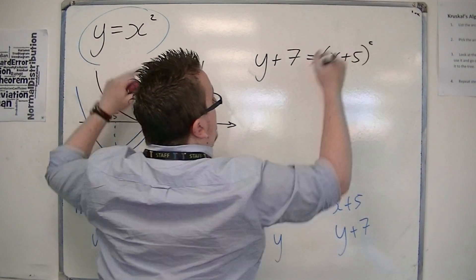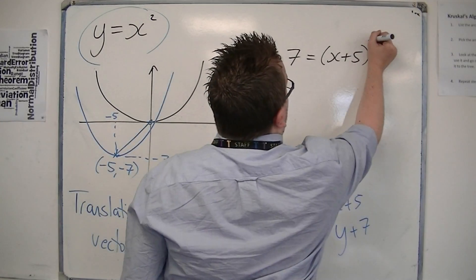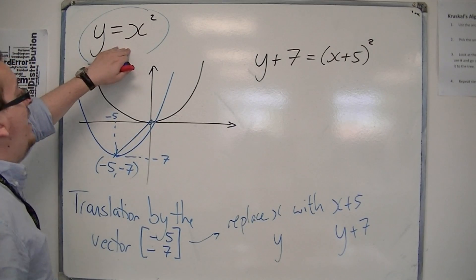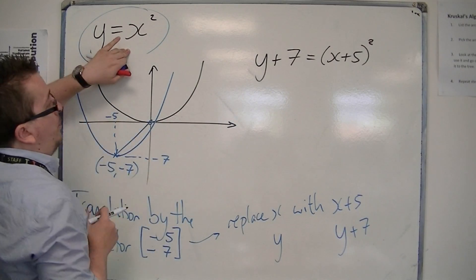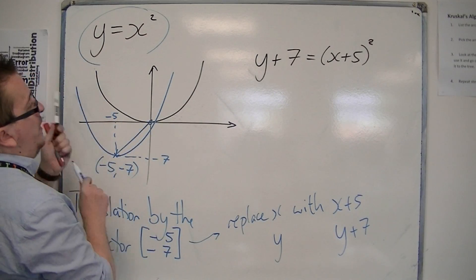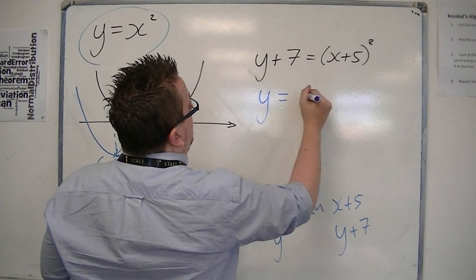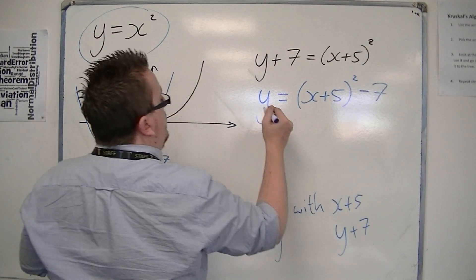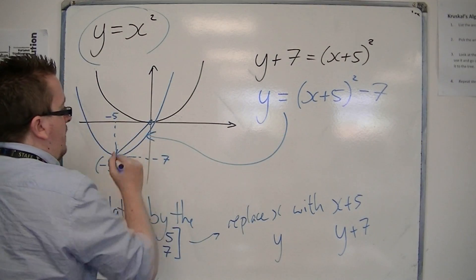So what I mean by all this replacing is that it's just in how the equation changes from y equals x squared to become this blue curve. So I can now take 7 from both sides.